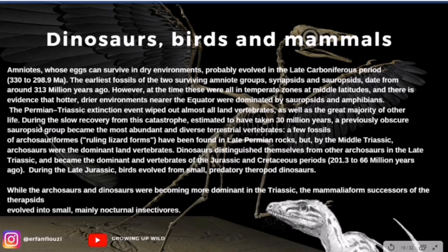Dinosaurs distinguished themselves from other archosaurs in the late Triassic and became the dominant vertebrates of the Jurassic. In the late Jurassic, birds evolved from small predatory theropod dinosaurs. While the archosaurs and dinosaurs were becoming more dominant in the Triassic, the mammalian successors of the therapsids evolved into small, mainly nocturnal insectivores. The first birds inherited teeth and long bony tails from their dinosaur ancestors, but some had developed toothless beaks by the late Jurassic and short pygostyle-style tails by the early Cretaceous. The ecological role of nocturnal life may have accelerated the development of endothermy — warm-bloodedness — and hair or fur.